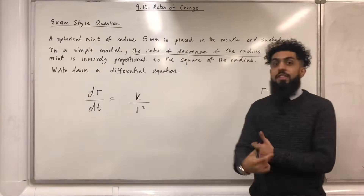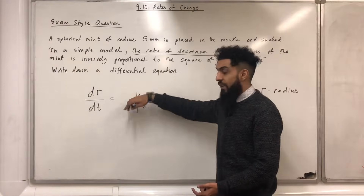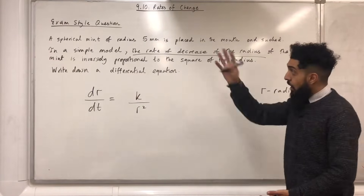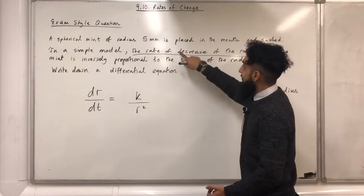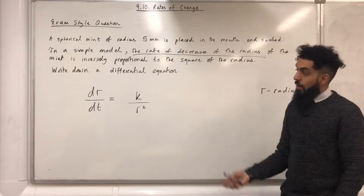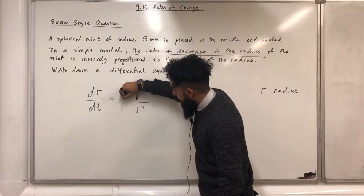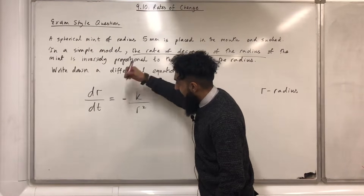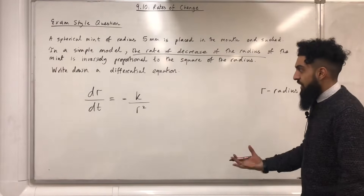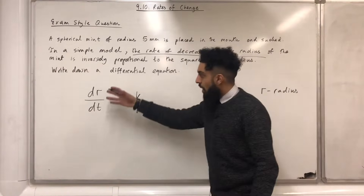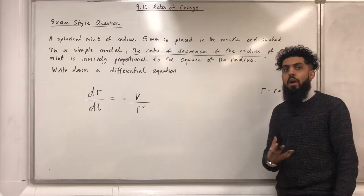Now I need to decide whether to put a minus sign in front or not. Going back to the question, it says rate of decrease, so we need to put a minus sign here to indicate the decrease. Therefore the differential equation is dr over dt equals minus k over r squared.